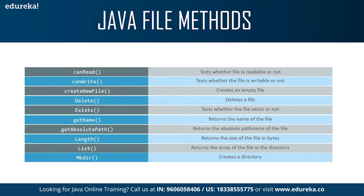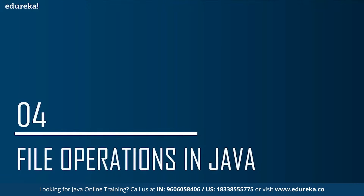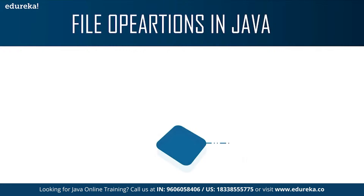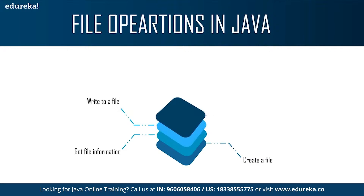You also have list — this method returns an array of files in the directory — and mkdir, which is used to create a directory. These methods are used to perform various file operations. The various file operations present in Java are: first you need to create a file, then once you create a file you need to get the information out of the file, after that you write information to the file, and then you read the data from the file. So now let's understand all these things in a much better way with the help of examples.